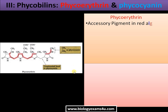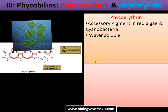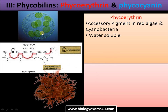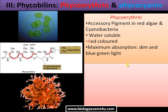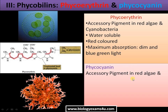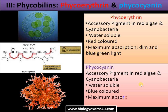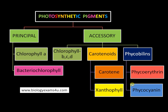The next class is the phycobilins, which include phycoerythrin and phycocyanin. Phycoerythrin is an accessory pigment in red algae and cyanobacteria (blue-green algae); it is a water-soluble pigment with maximum absorption in the green and blue-green light region. Phycocyanin is a bluish, water-soluble pigment present in red algae and blue-green algae, with maximum absorption in the orange and red light region. These pigments enable algae to live in the deep waters of the sea.